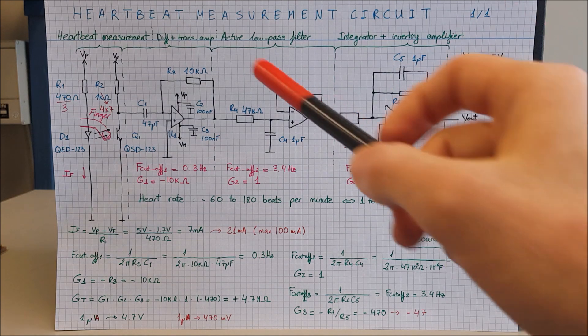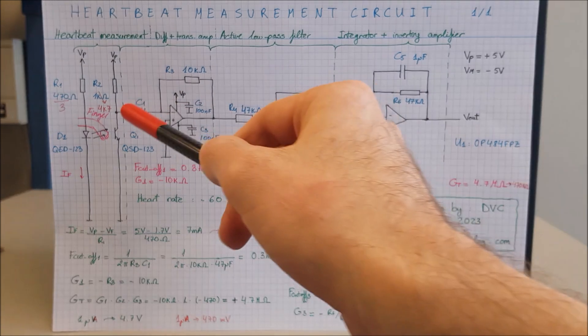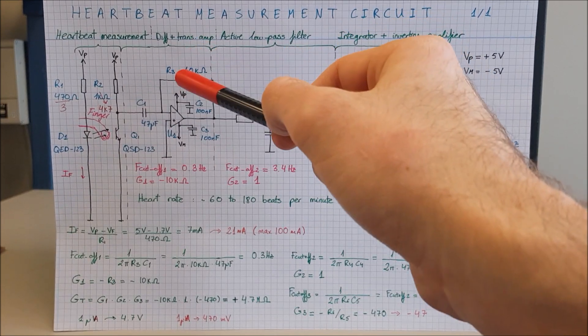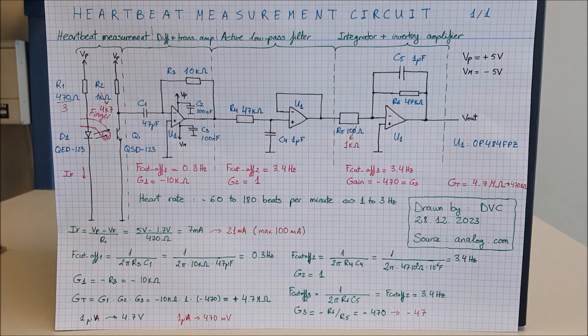The cutoff frequency, that means the frequency through which signals can go through, is 1 divided by 2 pi C1 times R3. That gives us 0.7 Hertz. This is a high-pass filter, meaning signals with frequencies higher than 0.3 Hertz will make it through.